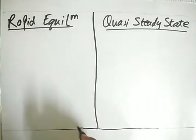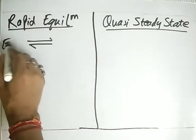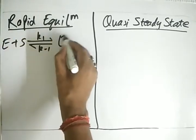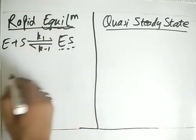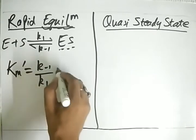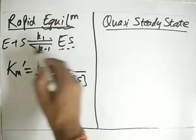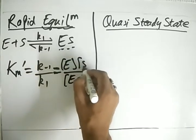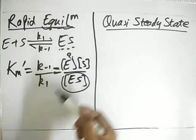In the rapid equilibrium approach, we focus on the reaction E + S ⇌ ES, with forward rate constant k1 and backward rate constant k-1. We define Km' = k-1 / k1. From the equilibrium expression, Km' = (E·S) / ES, so ES = (E·S) / Km'. The problem is we need to express free enzyme E.